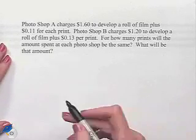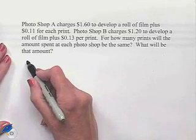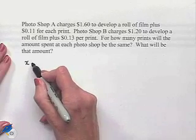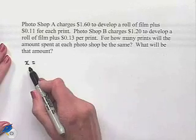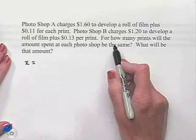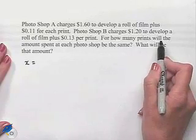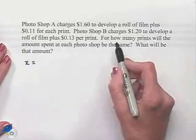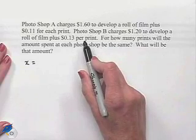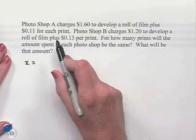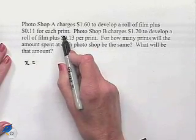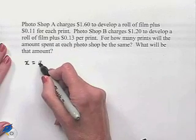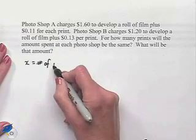We're going to begin by designating our variables as X. And in order to figure out what X should be, let's think about what our question is. For how many prints is what we'll be looking for. Notice that as we're given the information about the fees from each Photoshop, they're told to us in relation to how many prints we have. So it makes sense to let X equal the number of prints.